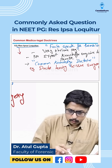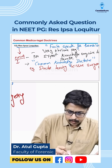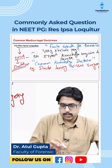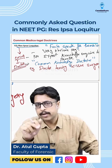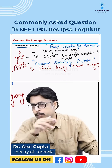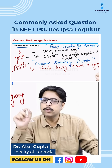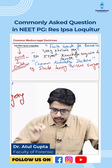Here, the onus to prove will lie with the doctor. If the doctor wants to prove that he is innocent, the onus to prove lies with the doctor, not with the patient. So this is one of those exceptions where the onus to prove lies with the accused.